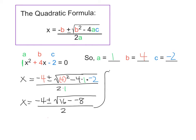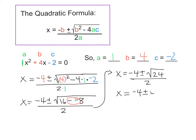Continuing: x equals negative 4 plus or minus the square root of 16 minus negative 8. Since minus a negative becomes plus, 16 plus 8 is 24, all over 2. Taking the square root of 24 on a calculator gives 4.89897..., and rounding to three decimal places we get 4.899. So x equals negative 4 plus or minus 4.899, all over 2.